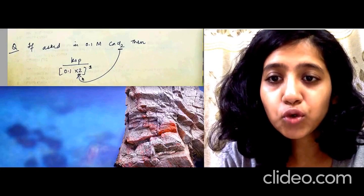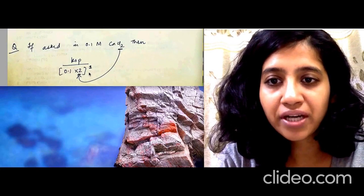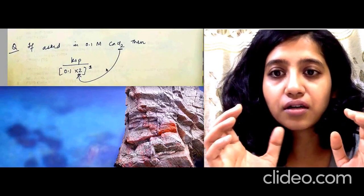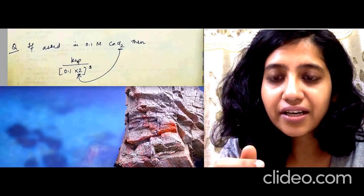Times 2, because there are two chloride ions here, right, which will contribute to common ion, raised to power 1, because the compound AgCl has only one chloride ion. So this will be Ksp divided by 0.2 technically. So this is the only change that will happen.